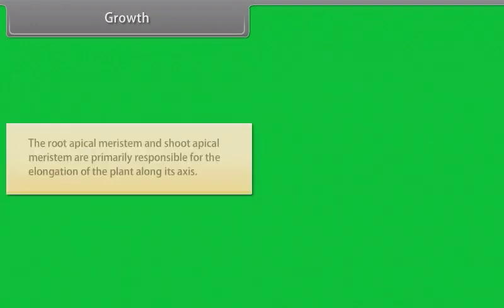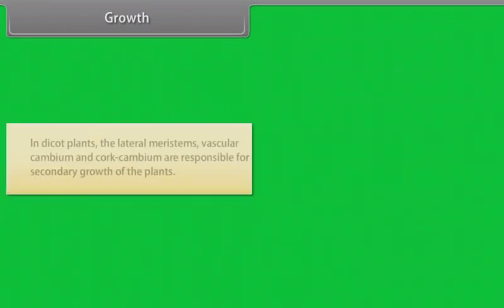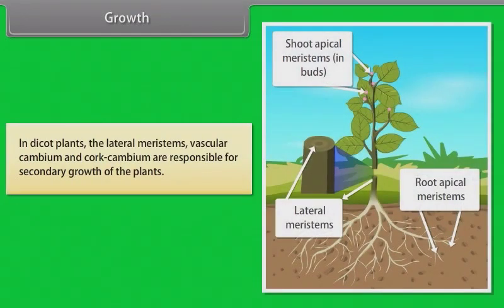The root apical meristem and shoot apical meristem are primarily responsible for the elongation of the plant along its axis. In dicot plants, the lateral meristems, vascular cambium and cork cambium, are responsible for secondary growth of the plants.